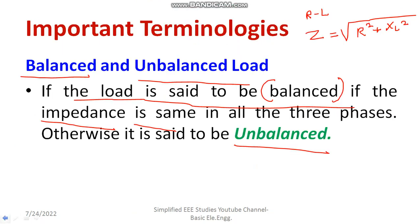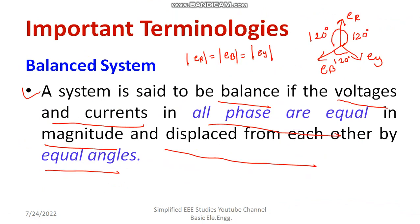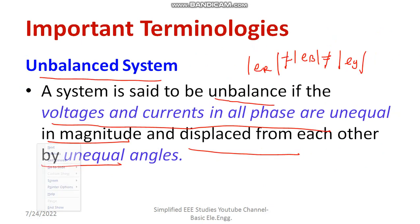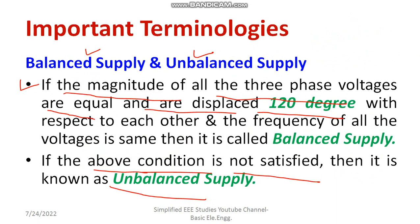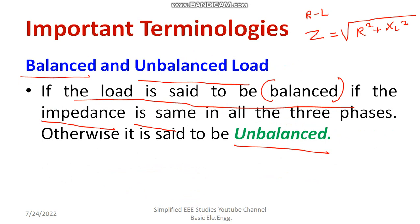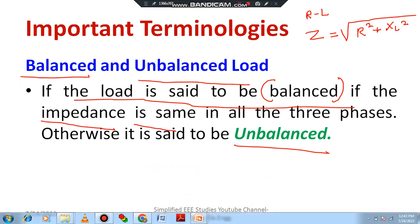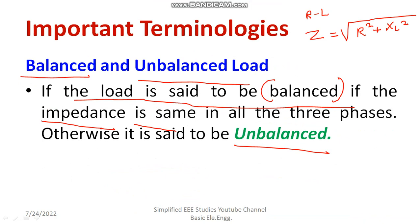To conclude this session, I have discussed the following terminologies: phase sequence, balanced system, unbalanced system, balanced supply, unbalanced supply, balanced load, and unbalanced load — these are the important terminologies used in a three-phase system. As an example, consider a three-phase load connected in star. If you activate only two of those particular loads, we call it an unbalanced system because the impedances will not be equal — such loads are called unbalanced load.